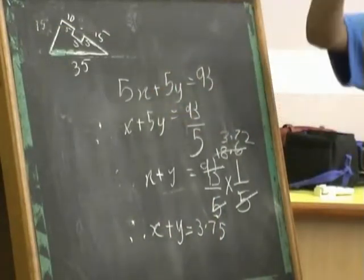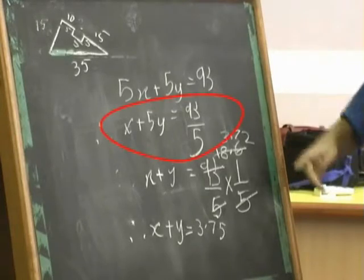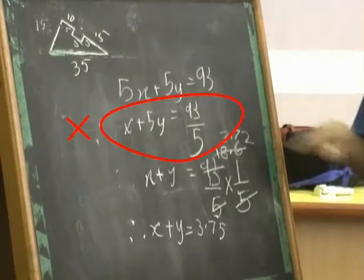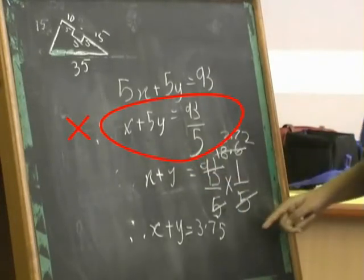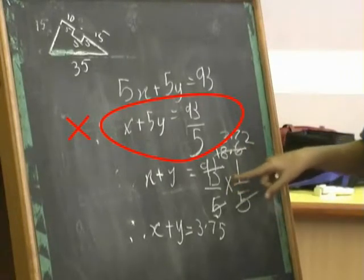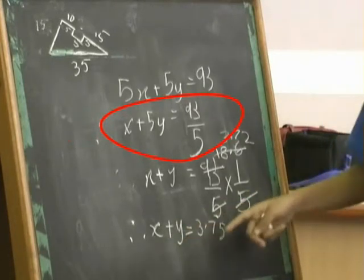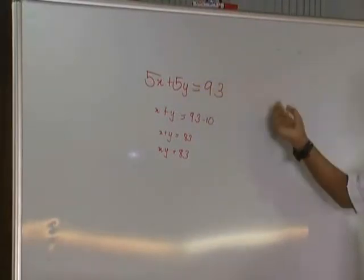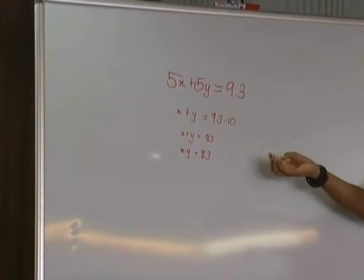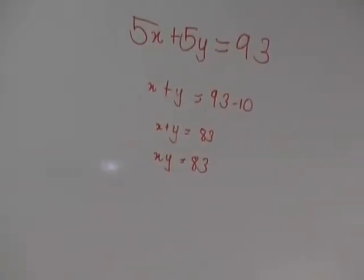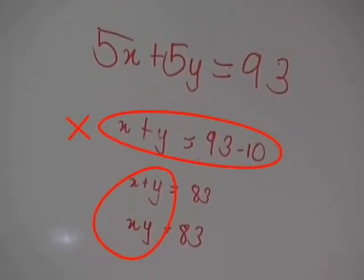I have taken the problem 5x plus 5y is equal to 93. And now when I transpose 5 to the other side, x remains and it becomes 93 divided by 5. Then I also do the same thing — I transpose 5 to the other side and it becomes 1 by 5. And then I do some division and find the answer: x plus y is equal to 3.75. Actually, 5 and 5 moved to this side will become minus 10, so it will become 93 minus 10 which is equal to 83, and x plus y is equal to 83. What is the difference between x plus y and xy? X plus y are two different terms altogether, whereas xy are together one term, I think.